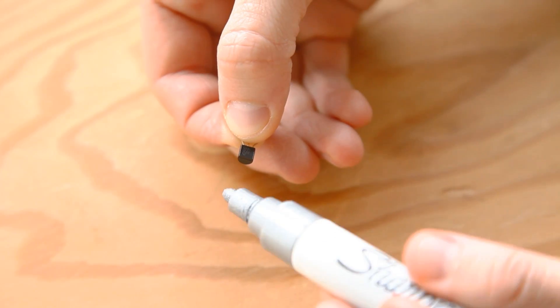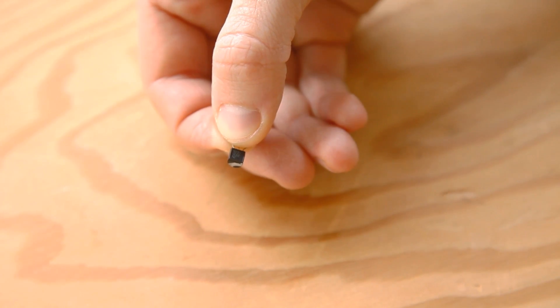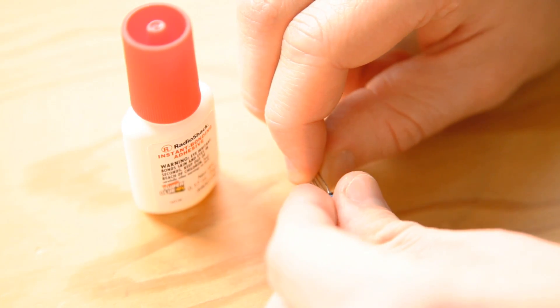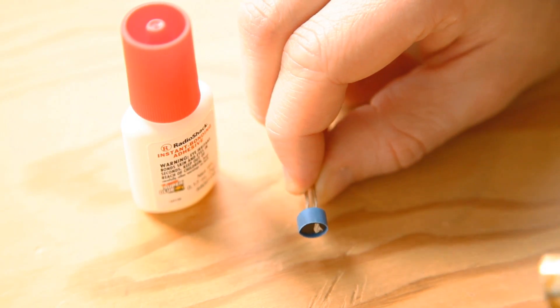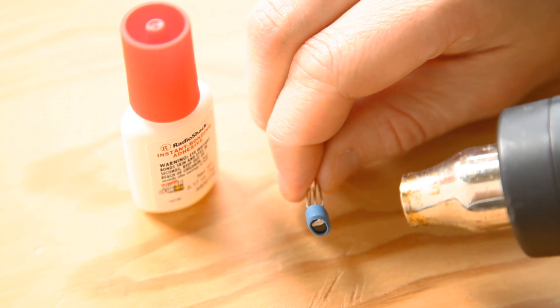Mark the top of the 3906 transistor so that it can be identified later. Join the two transistors facing each other like so. Along with glue, you can use some colorful heat shrink tubing to join them together.